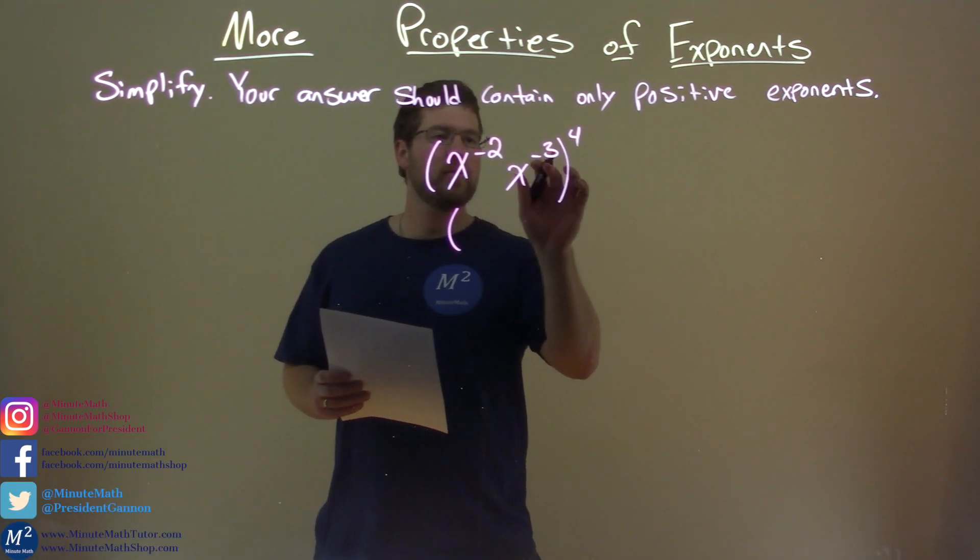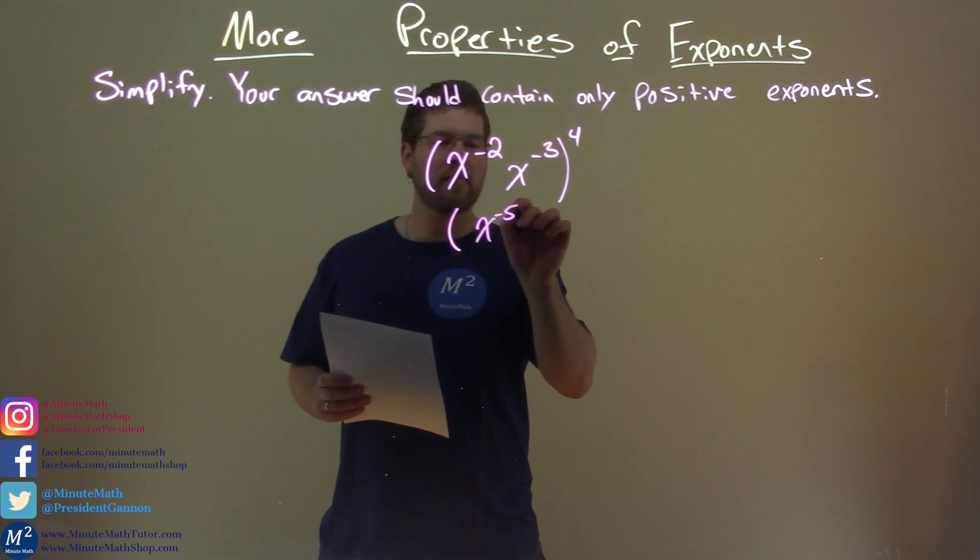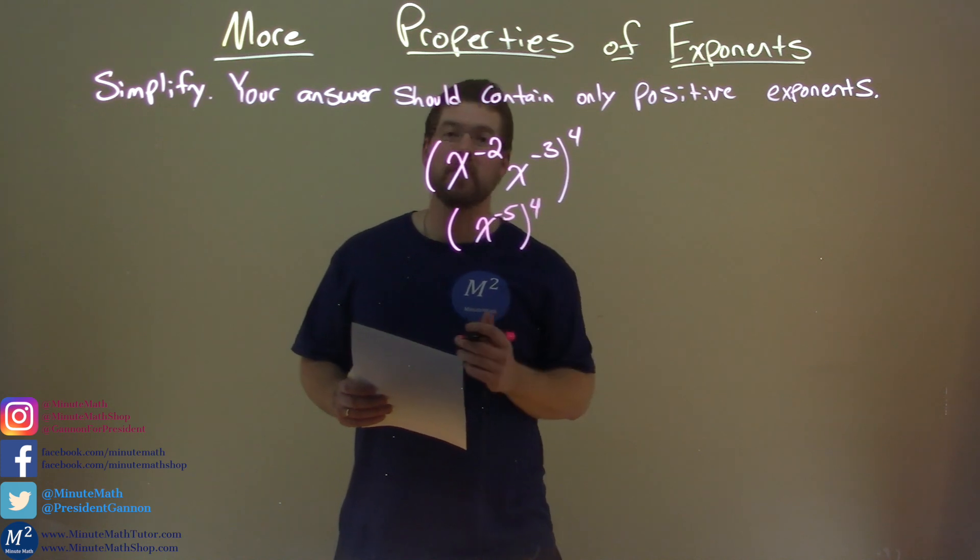So, negative 2 plus negative 3 is a negative 5. So we have x to the negative 5 power here, all to the 4th power.